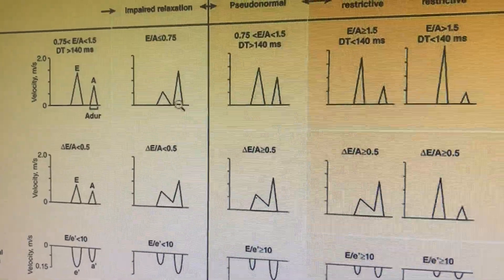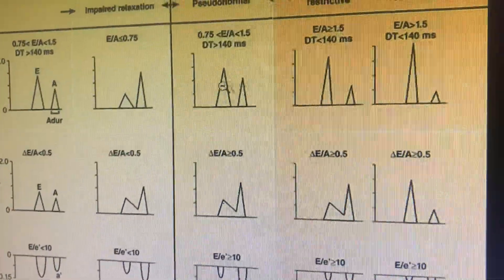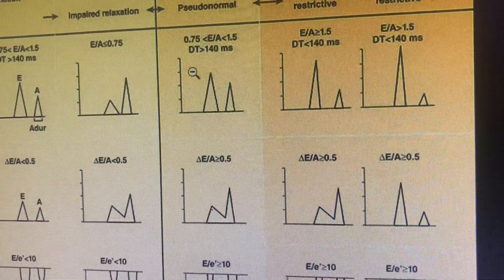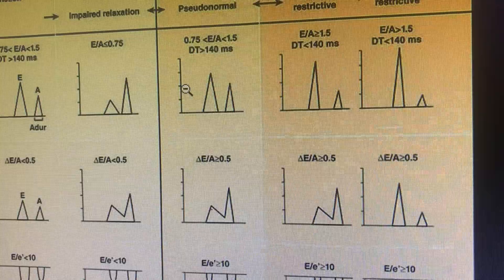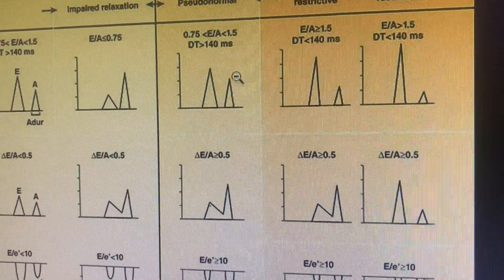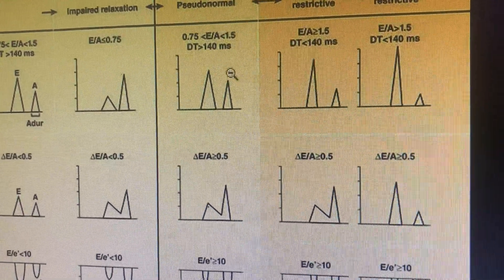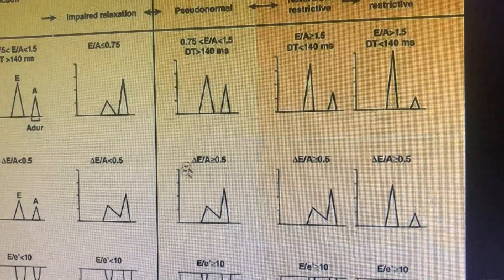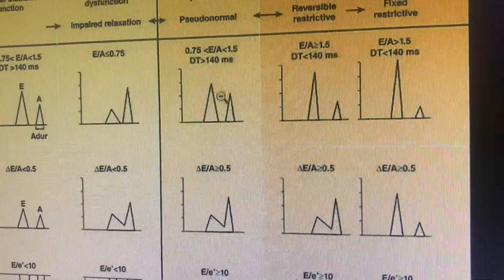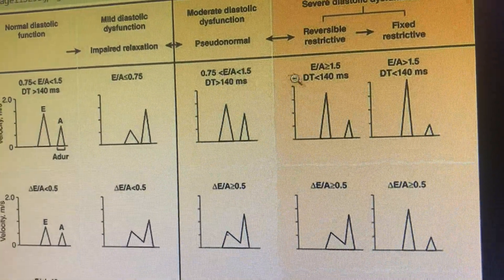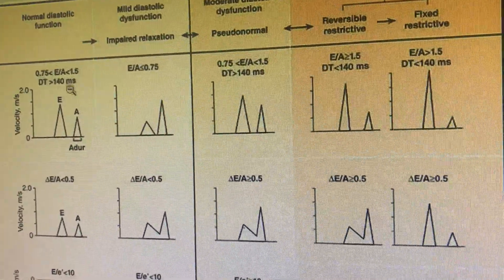In pseudo-normal, you will get E more than A again because once the filling pressure increases, the early filling starts increasing. The LA dilates and starts accumulating more blood, and in the early filling it will send more blood at increased pressure. Here the parameters will be the same as in the normal - it becomes pseudo-normal.